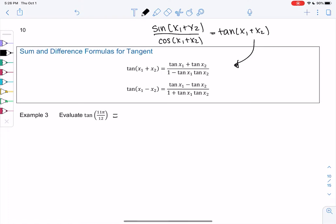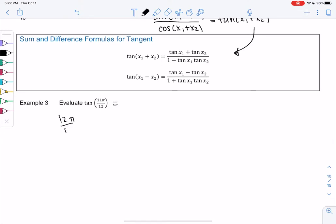So let's see. 11π over 12 could be 12π over 12 minus π over 12, which is π minus π over 12. Not helpful because we don't know π over 12 on the unit circle. How else could we make π 11? I might be tempted to do 5 plus 6.